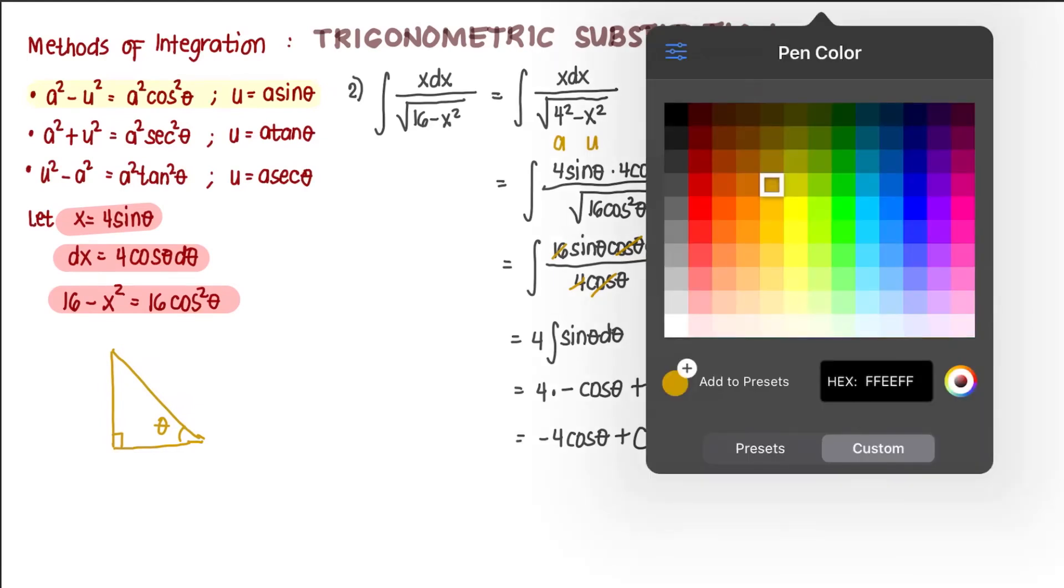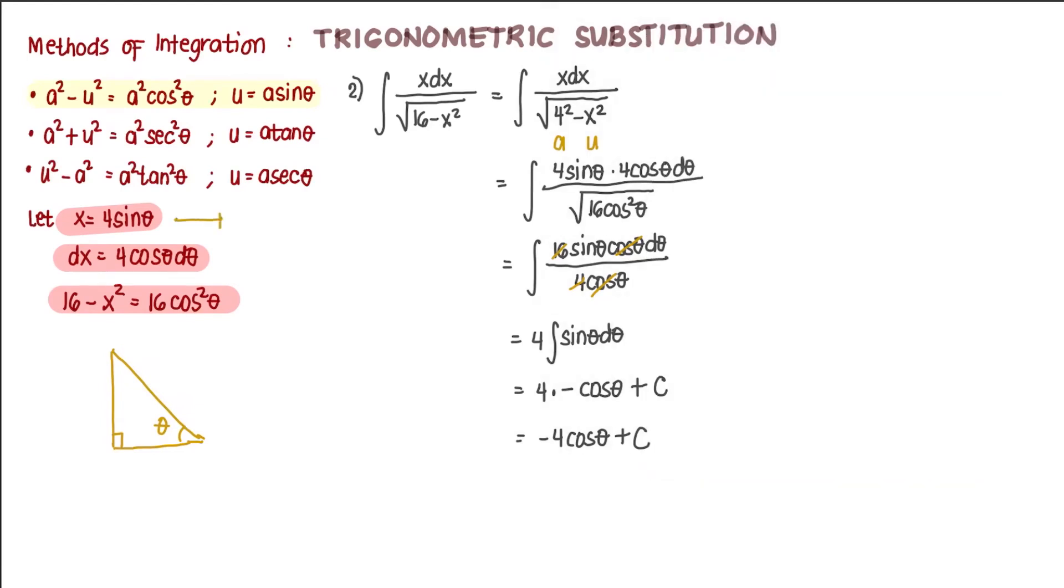So since x is equal to 4 sine theta, then sine theta is equal to x over 4. Now recall that sine theta is opposite over hypotenuse. Now we label that now in our right triangle. So if this is theta, then the opposite side is x, and the hypotenuse is 4.